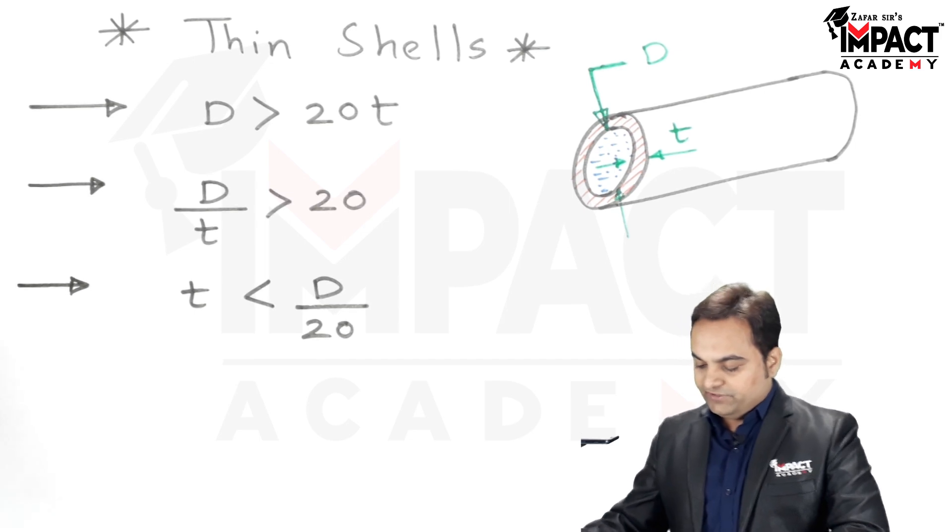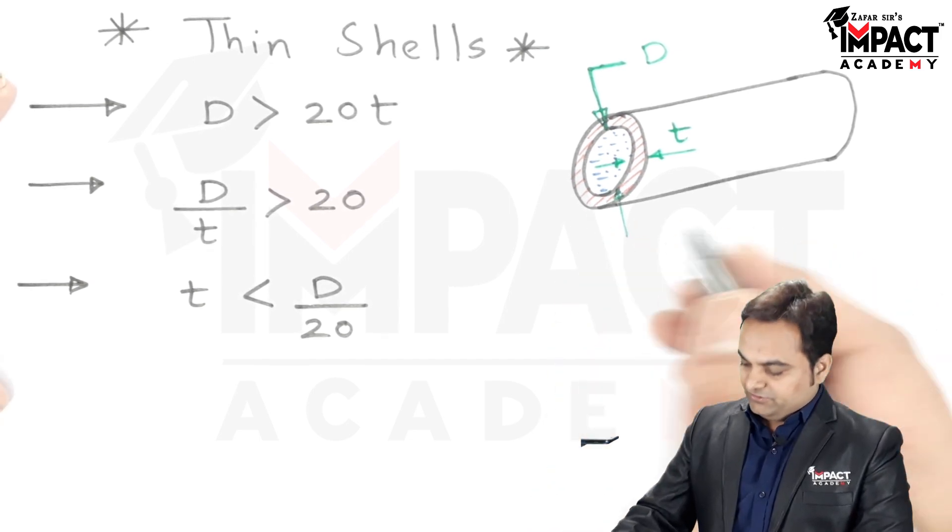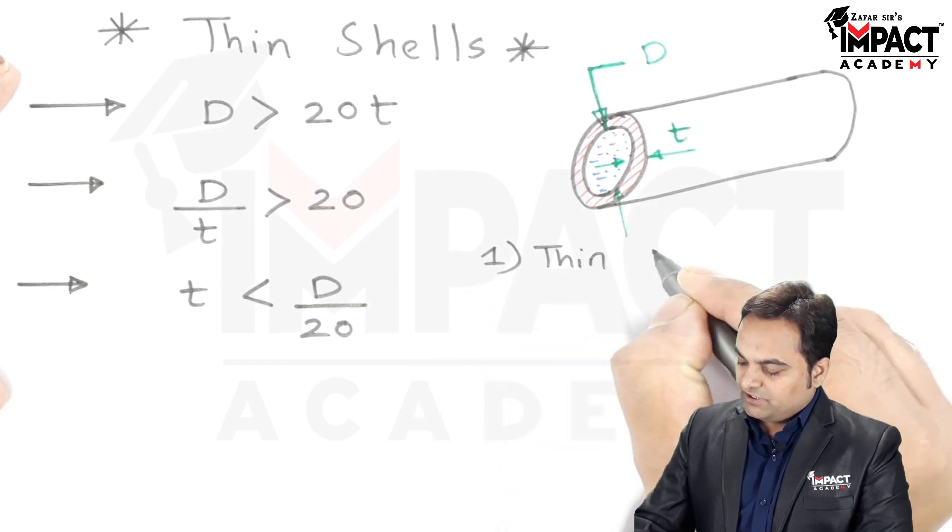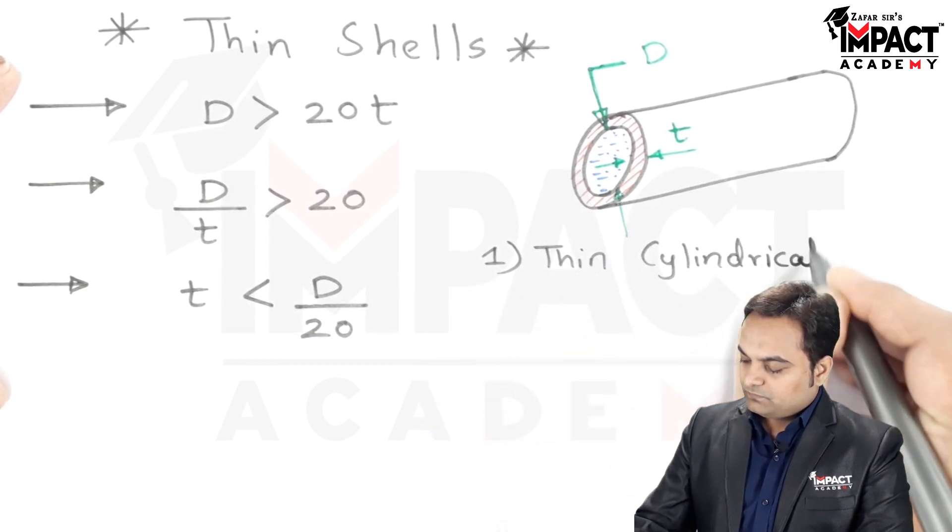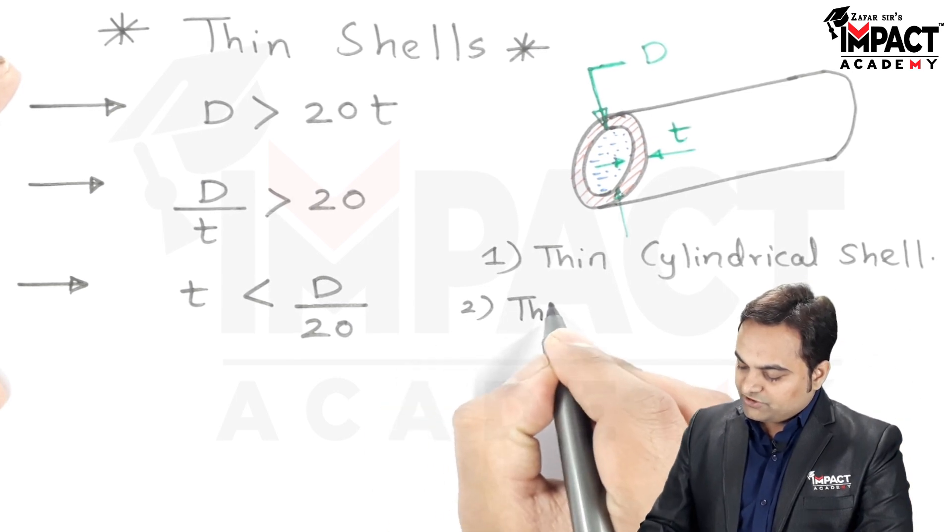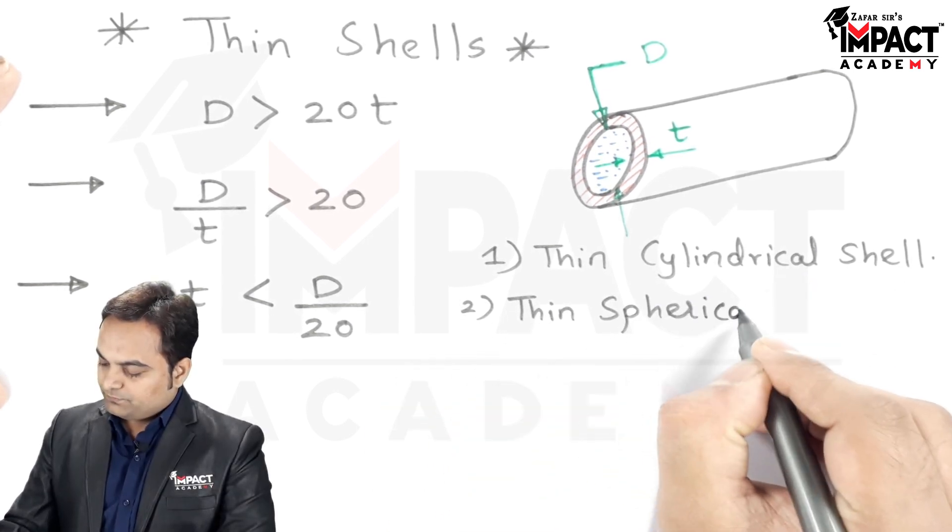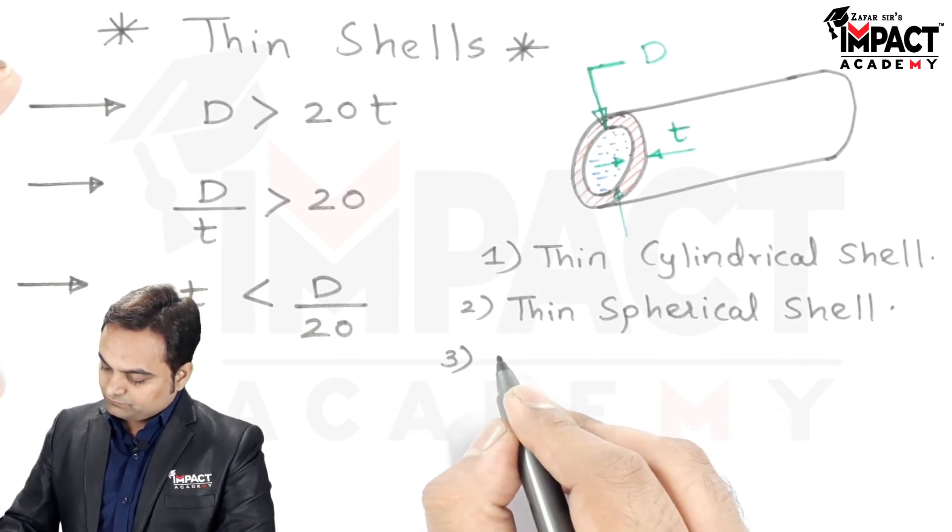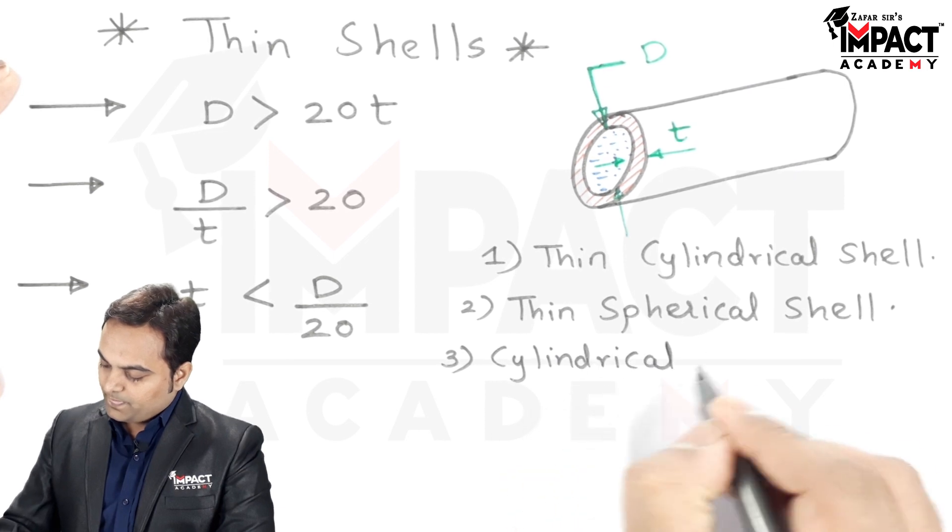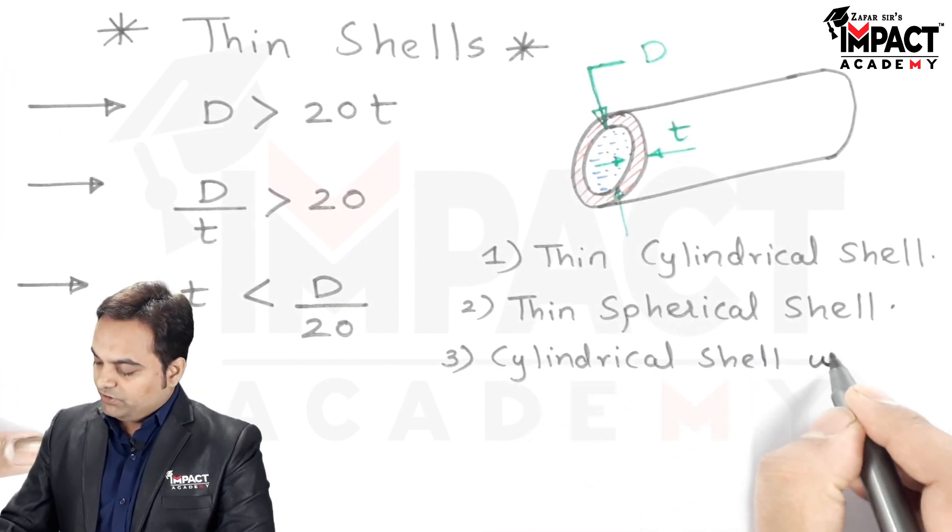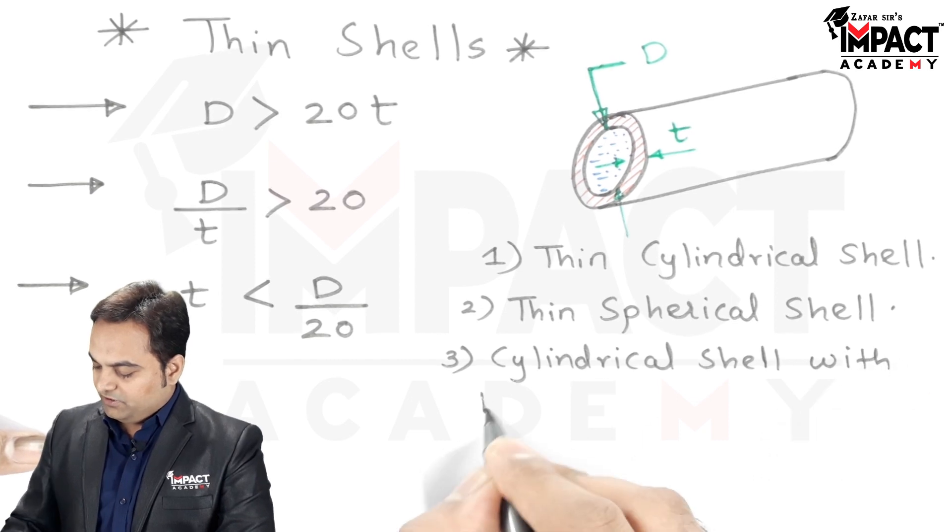Now, when we go for thin shells, there are basically three types of thin shells. First is thin cylindrical shell, next is thin spherical shell, and then cylindrical shell with hemispherical ends.